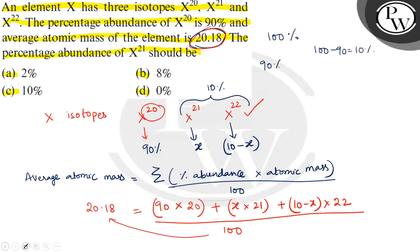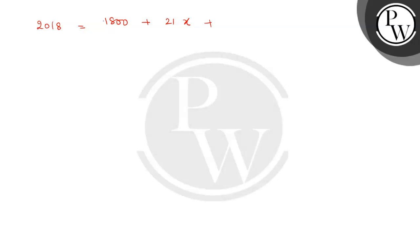2018 is equal to 90 into 20, 1800 plus 21X plus 22X. Multiply, 22 into 10, 220 minus 22X. On multiplication you will get 220 minus 22X.